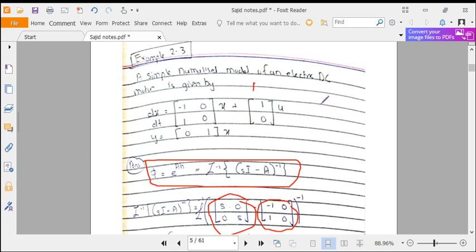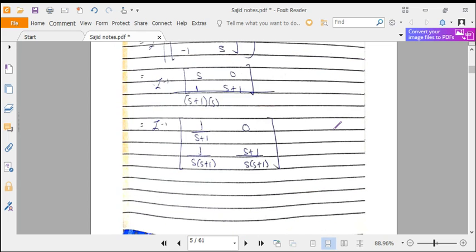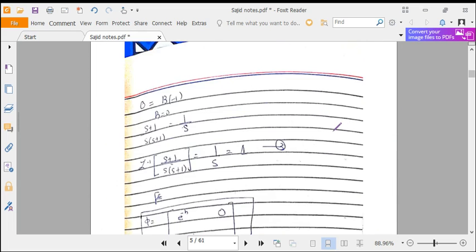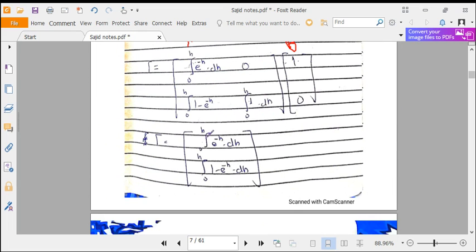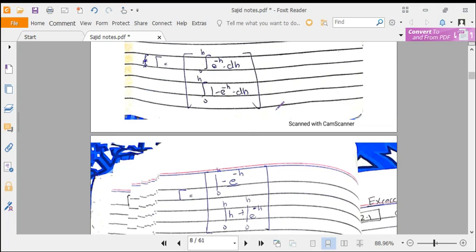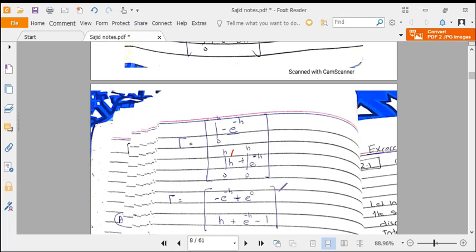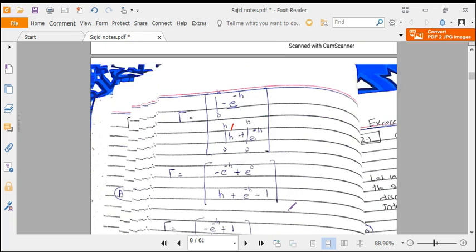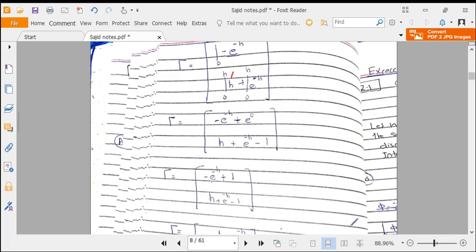We take its integral. Integral of e^(-h) would be -e^(-h), and integral of 1 would be h, and integral of 1-e^(-h) would be - minus e^(-h), minus minus comes out to be plus, and e^(-h). We have the limit from 0 to h, so we put the limits and we get gamma like this.